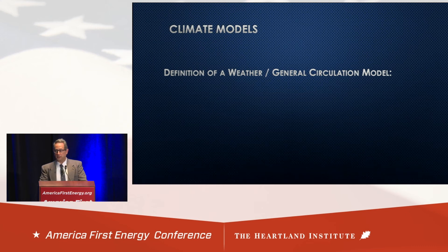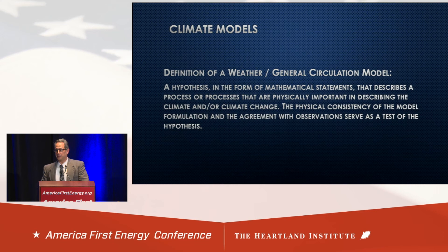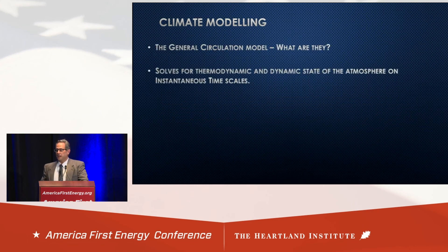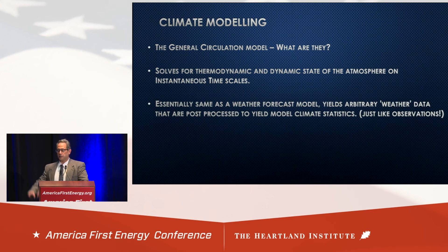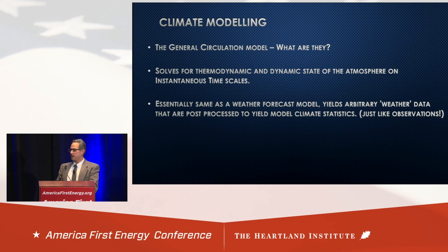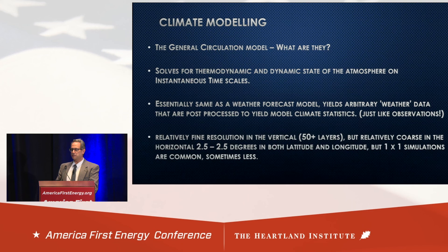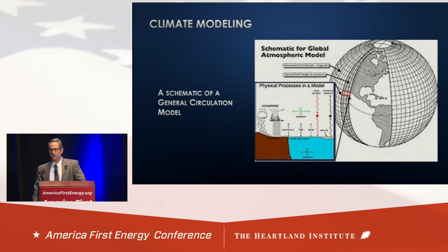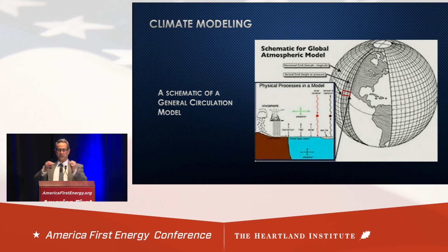Let's talk about climate models. A general circulation model is a hypothesis — it's not the real atmosphere, although some scientists like to think it is. These general circulation models solve for the state of the atmosphere; they are essentially souped-up or differently tasked weather models that produce instantaneous data just like observations. They take data, import it onto a three-dimensional grid, run the data forward in time using the primitive equations, and then parameterize other processes like convection and ocean temperature feedbacks.